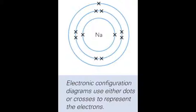Electronic configurations can be worked out using atomic numbers. For example, the atomic number of sodium is 11. This means that there are 11 protons and also 11 electrons.